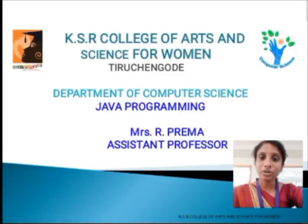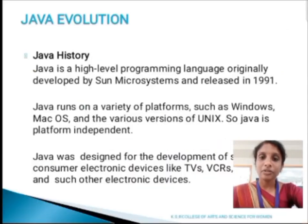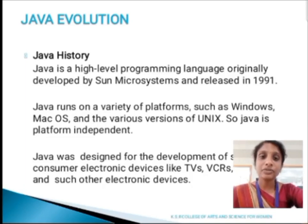Today we are going to learn about Java programming. First, we are going to discuss about Java evaluation. It was developed by Sun Microsystem in 1991. Java is a high-level programming language and it runs on various platforms such as Windows, Mac OS and various versions of Unix.